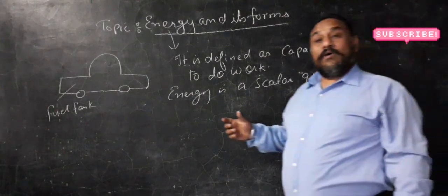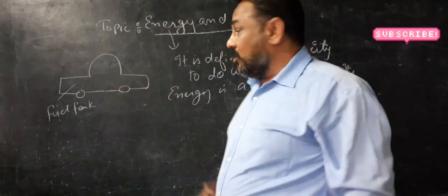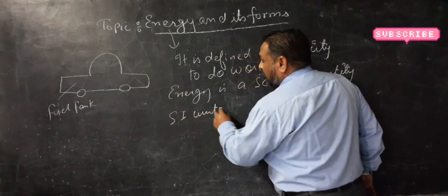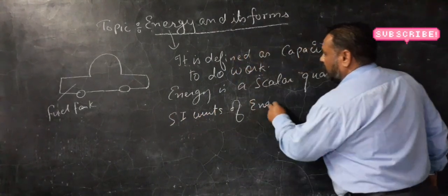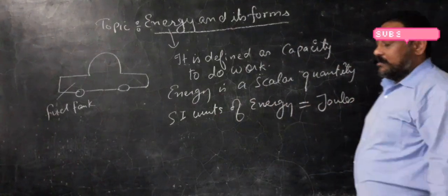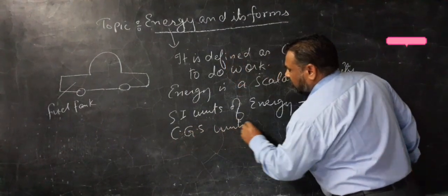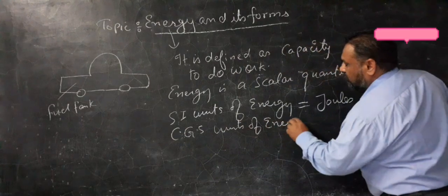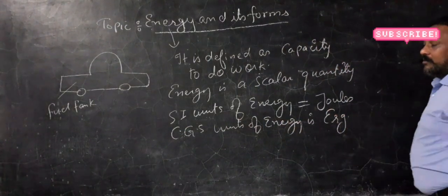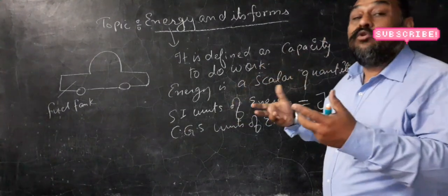Now we will talk about the SI units of energy. SI unit of energy is joules, and CGS unit of energy is erg.